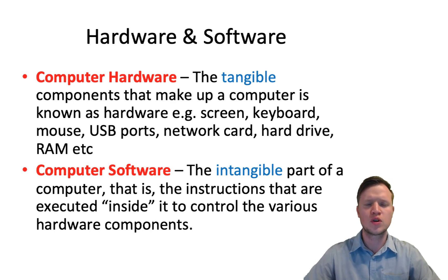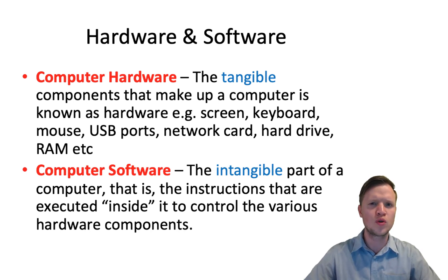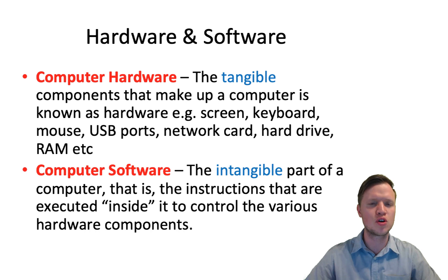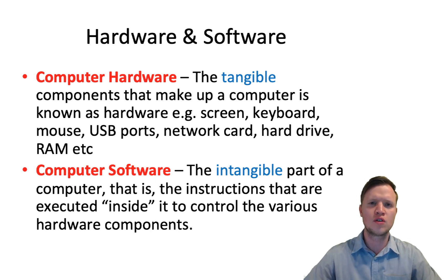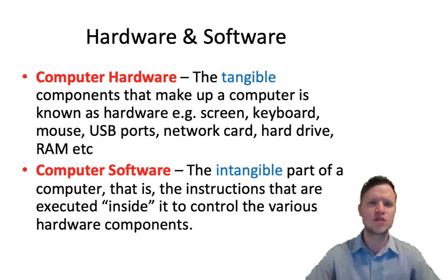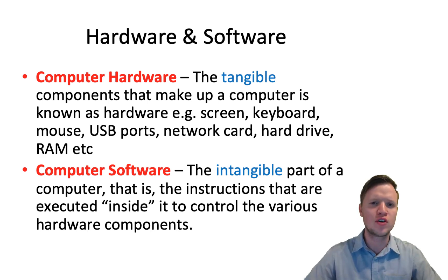A computer has two parts: hardware and software. Hardware refers to physical things and software is more of an intangible thing. Computer hardware is the tangible components of a computer — for instance, the screen, the keyboard, the actual motherboard where all the resistors and chips are. Computer software is intangible; this will be like applications, operating systems, apps that run on a computer. We can't touch it but we can visibly see it on the computer and how it works.